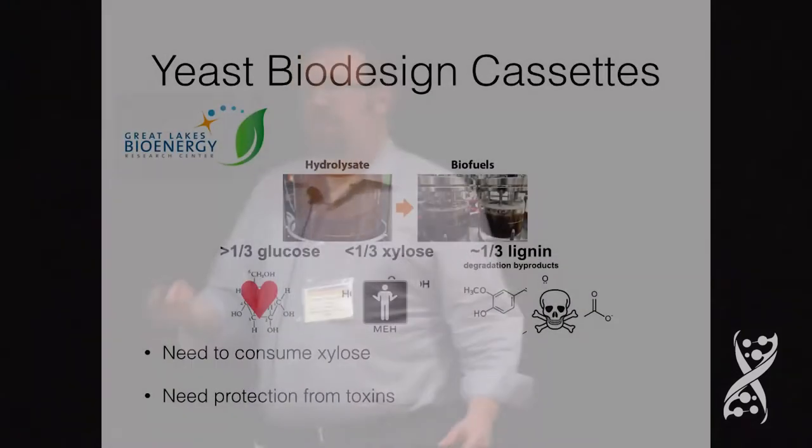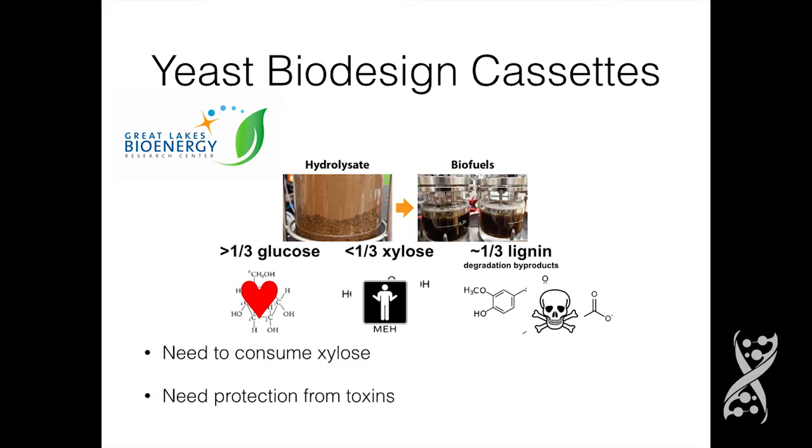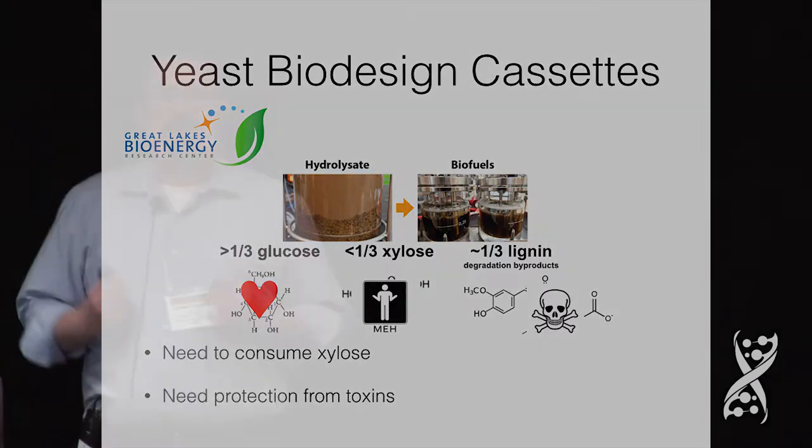How does this tie into JGI and the DNA synthesis program? I'm part of the Great Lakes Bioenergy Research Center at UW-Madison, particularly the conversion area, which researches how to get yeast and other microorganisms to convert hydrolysate into useful fuel. What we're working with is apex hydrolysate, which has a lot of glucose, a little bit of xylose, and a bunch of lignin. Yeast love glucose but don't even see xylose unless they're engineered to, and lignotoxins kill them pretty badly. The two big overarching questions are: how do we get yeast to use xylose more, and how do we get them to resist the toxicity of their hydrolysate better?